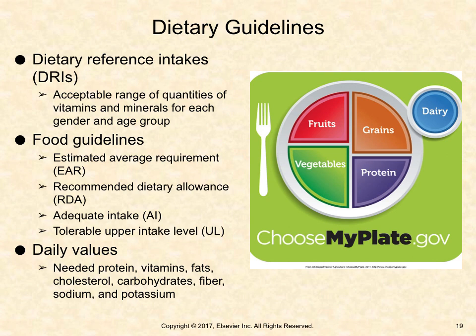Daily values include proteins, vitamins, fats, cholesterol, carbohydrates, fiber, sodium, and potassium. The daily values are based on percentages of a diet consisting of 2,000 kcal for adults and children 4 years or older.